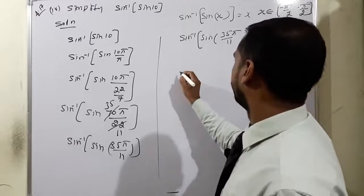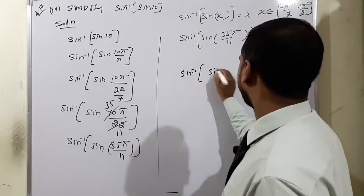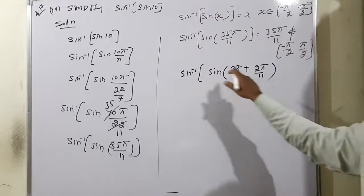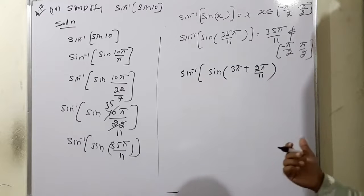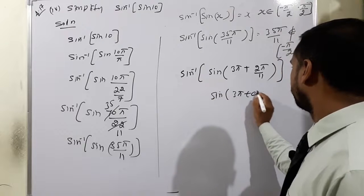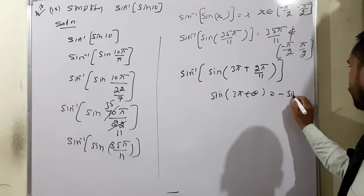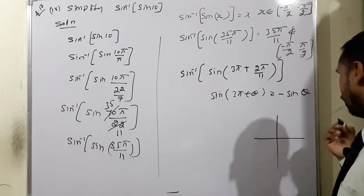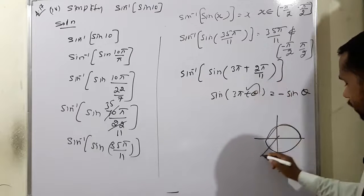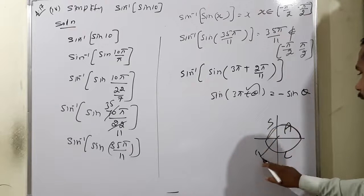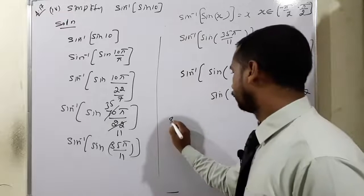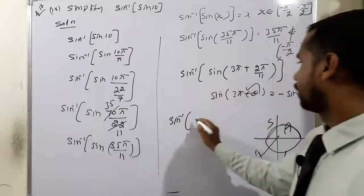Rearranging: 35/11 = 3π + 2π/11, because 3 × 11 = 33 and 33π + 2π = 35π/11. Now, sin(3π + θ) equals minus sin θ. Looking at the unit circle: 3π places us in the third quadrant (3π to 4π range), where only tangent is positive. Since sine is negative there, sin(3π + θ) = −sin θ.